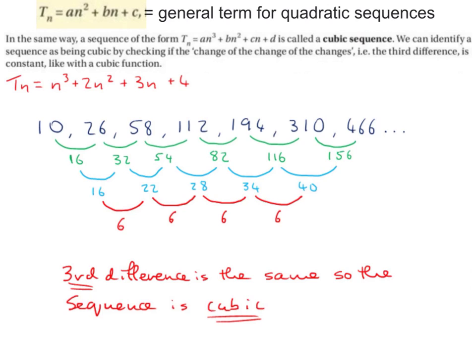Now I'm going to find the second difference. The difference between 16 and 32 is 16. Between 32 and 54 is 22. Between 54 and 82 is 28. Between 82 and 116 is 34. Between 116 and 156 is 40. Clearly the second difference is not the same, so this sequence is not quadratic.